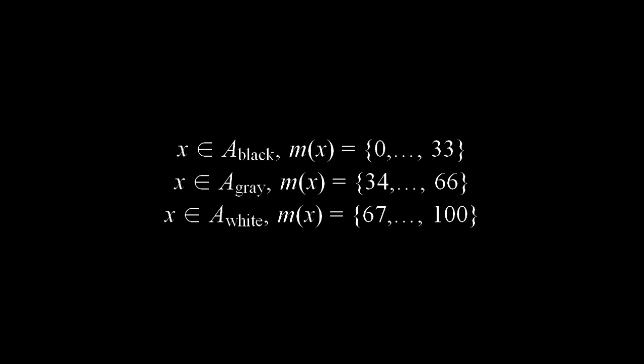A fuzzy set allows a number to be a member of both sets to varying degrees. Let's go back to our gray bar. If we number the shades from 1 to 100, then 1 is definitely black, 50 is definitely gray, and 100 is definitely white.